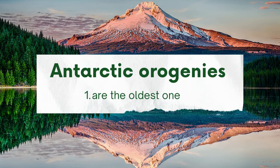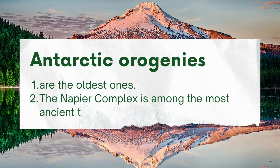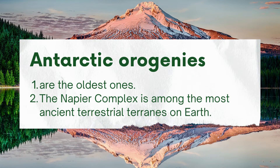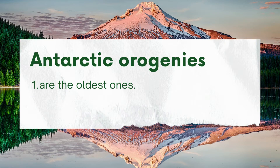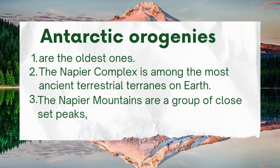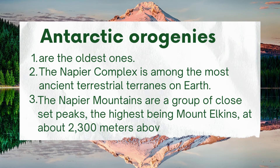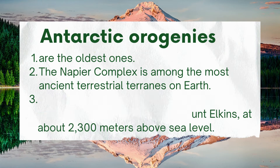Antarctic Orogenys are the oldest ones. The Napier Complex is among the most ancient terrestrial terrains on Earth. The Napier Mountains are a group of close-set peaks, the highest being Mount Elkins at about 2,300 meters above sea level.